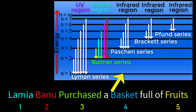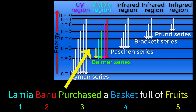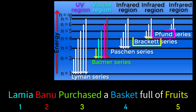This is the first energy level where n equals 1, called Lyman's energy level — that is why the name Lyman comes first. This is the second energy level where n equals 2, called Balmer's energy level, so Balmer is in the second position. This is the third energy level where n equals 3, called Paschen's energy level, so Paschen is in the third position. In the same way we get the remaining two names.